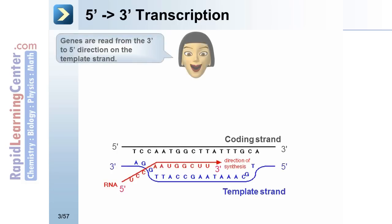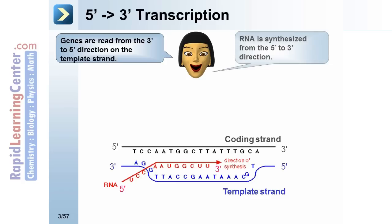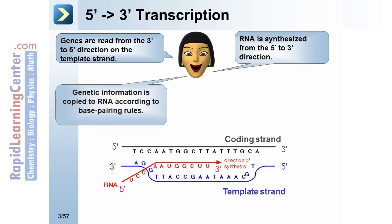5' to 3' transcription. Genes are read from the 3' to 5' direction from the template strand. RNA is synthesized from the 5' to 3' direction. Genetic information is copied to RNA according to base pairing rules. Sometimes this directionality — 3' to 5', 5' to 3' — is a little difficult to understand. It's a good idea to get threads or yarn of different colors and pretend one is RNA and one is DNA, and see if you can understand intuitively the directionality of the transcription and later on of when DNA is copied.